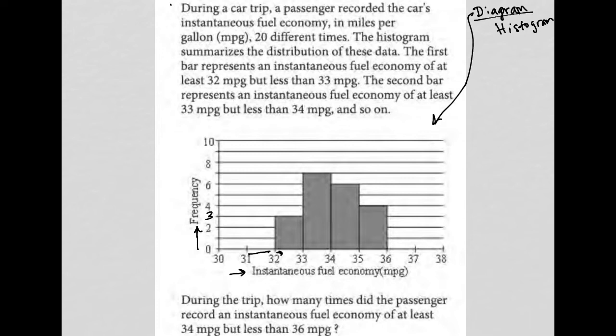So there were three times in which the MPG was recorded, right, because it was recorded 20 different times. Three of those times, that MPG was somewhere between 32 and 33.